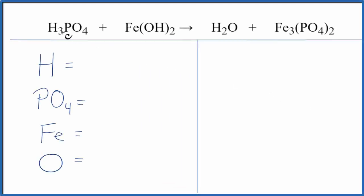In this video, we'll balance the equation H3PO4 plus Fe(OH)2. That's phosphoric acid and iron 2 hydroxide. It's a bit of an involved equation. Let's make it a little bit easier and I'll show you how.